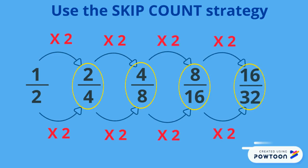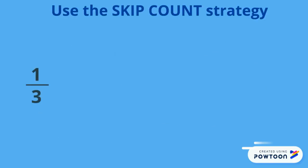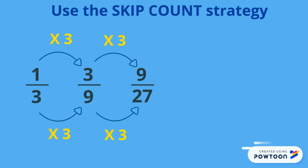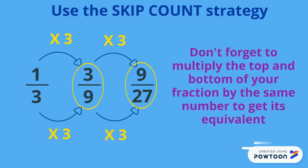You can skip count by any number you choose: times three, times two, times seven, whatever you feel like. Just don't forget to multiply the top and the bottom of your fraction by the same number to get its equivalent fraction.